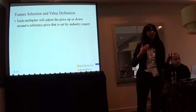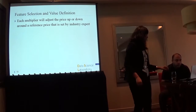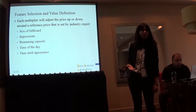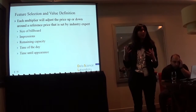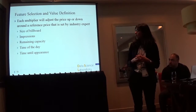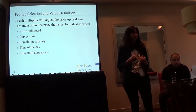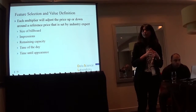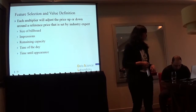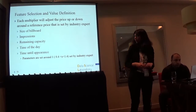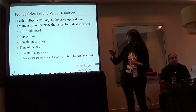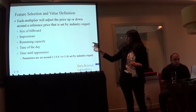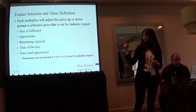For the control variables — all the variables that might affect demand — we used them as multipliers. Each multiplier adjusted the price either up or down, functioning as either a premium or a discount around the base price from Lamar. The variables we considered were: size of the billboard, number of impressions, remaining capacity of the billboard, time of day and what time slot we're looking at, and time until appearance. For example, if reserving a spot one month in advance, that would receive a discount, whereas reserving two days before would have different pricing. To increase price we multiplied by 1.4; to give a discount we multiplied by 0.4.